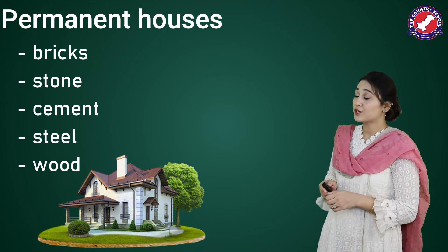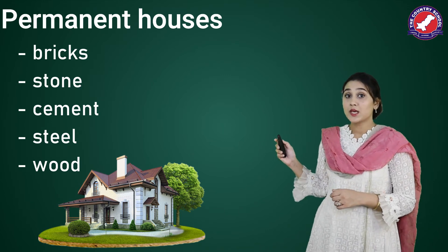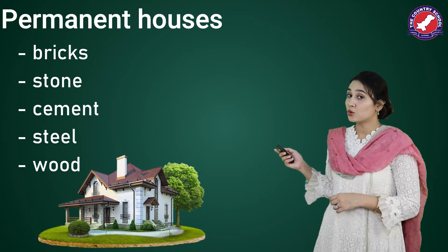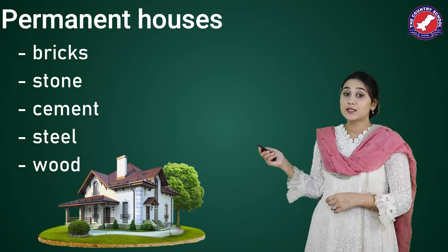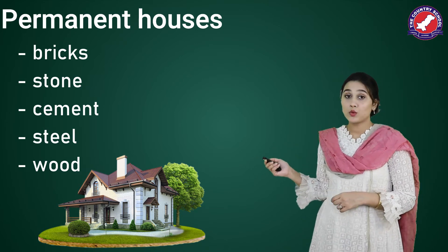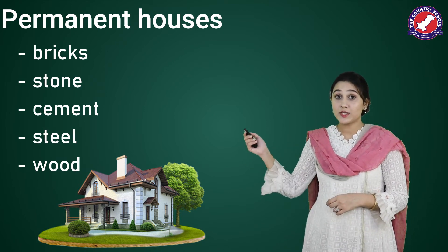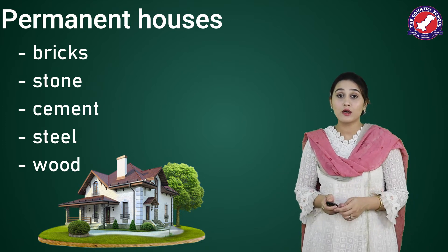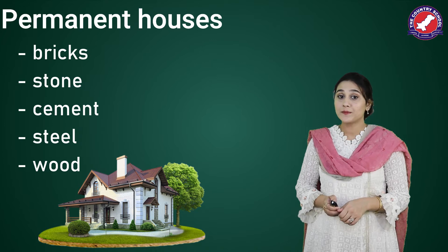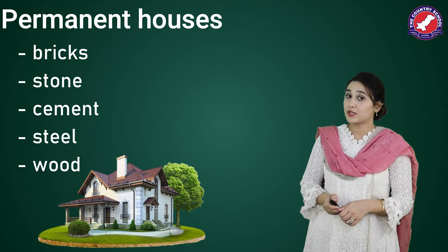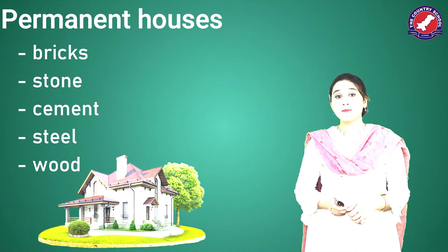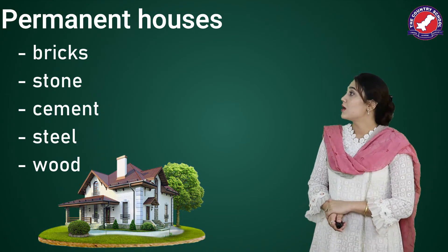What are permanent houses made of? Particularly this house — it's made up of bricks, stones, cement, steel, and wood. All these materials are so strong, that is why they make a very strong house. Such types of houses are found mostly in cities.